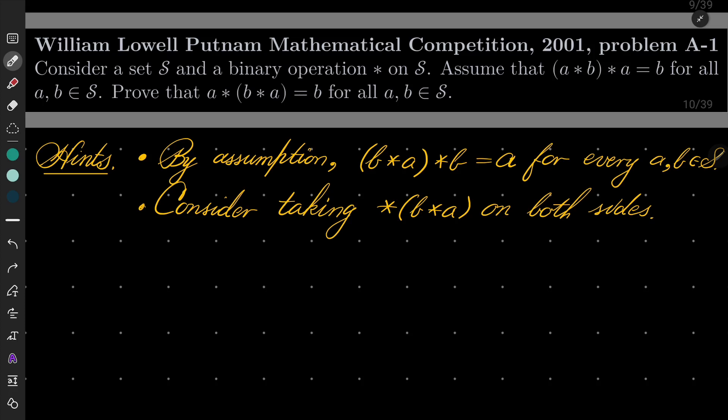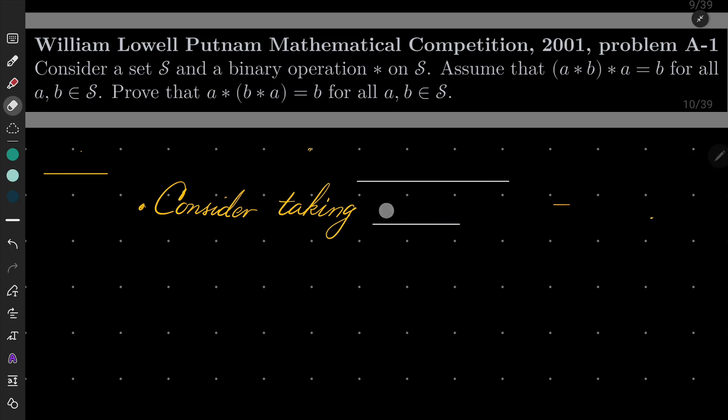So my hint: this problem is very easy. By assumption you can change a to b and b to a and write our assumption in this form, and then consider just taking star b star a on both sides and see what happens. So give this problem a try and I will see you in just a minute.